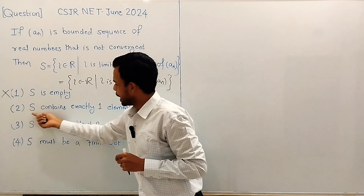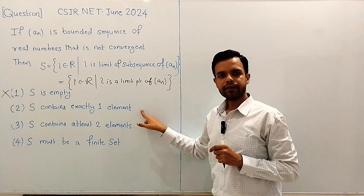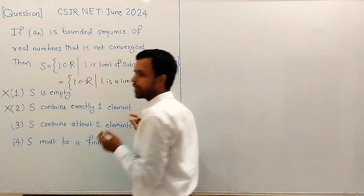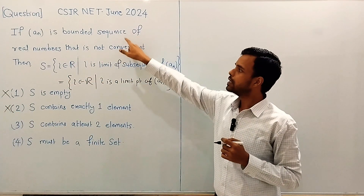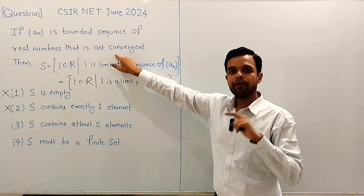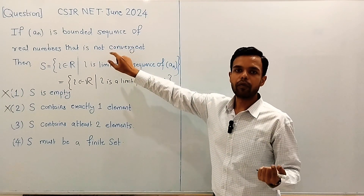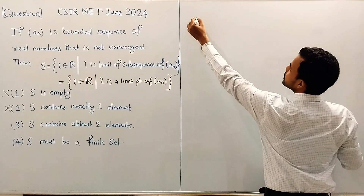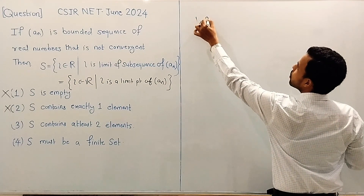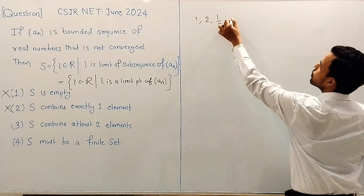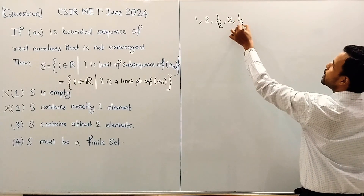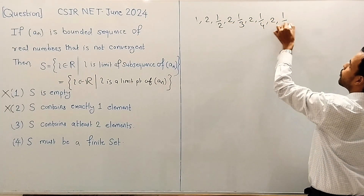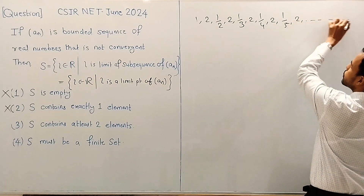Let us see option two: does S contain exactly one element? Again, no, because we can easily construct a bounded sequence of real numbers which has more than one limit point. Consider the sequence: 1, 2, 1/2, 2, 1/3, 2, 1/4, 2, 1/5, 2, and so on.